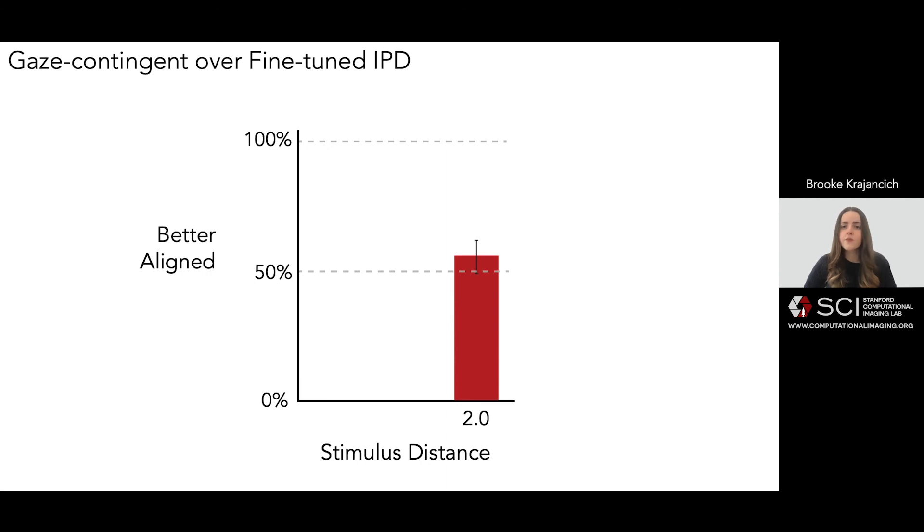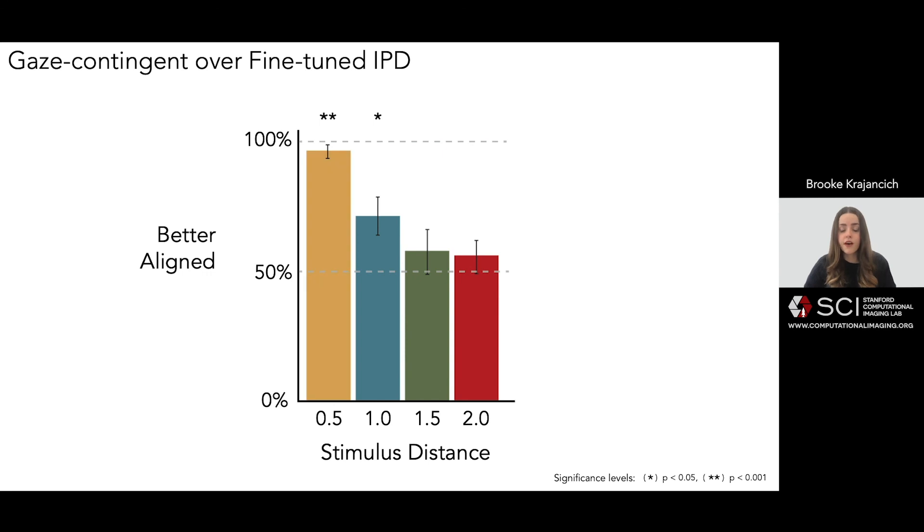that initial calibration task had the user fine-tune their IPD such that both rendering modes were both equivalent and accurate at that specific depth. But while the difference between the modes was not significant enough to be observed at 1.5 meters, at 1, and particularly 0.5 meters, our gaze contingent approach was chosen to give significantly more accurate alignment.